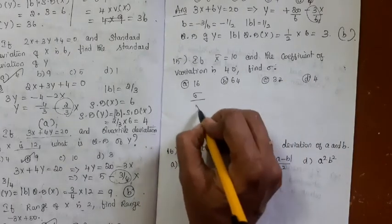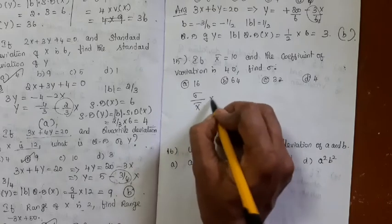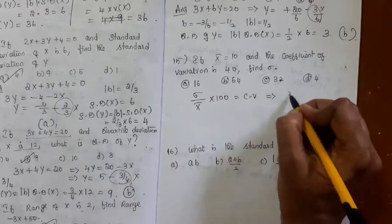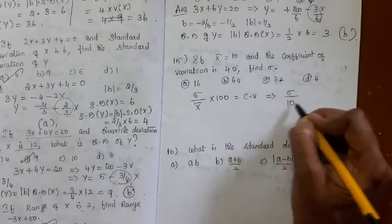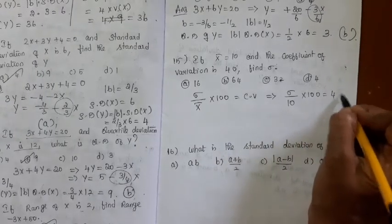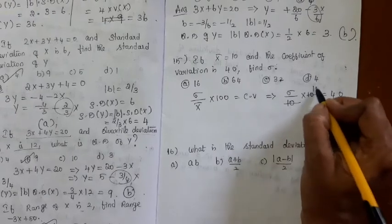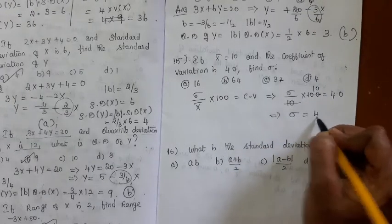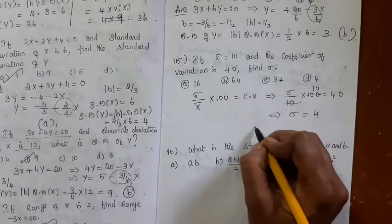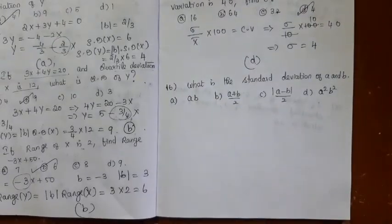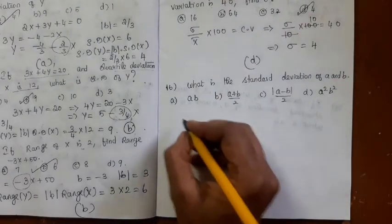If x̄ = 10 and coefficient of variation = 40, find sigma. Using CV = (σ / x̄) × 100: σ / 10 × 100 = 40, so σ = 40/10 = 4. The answer is option D.